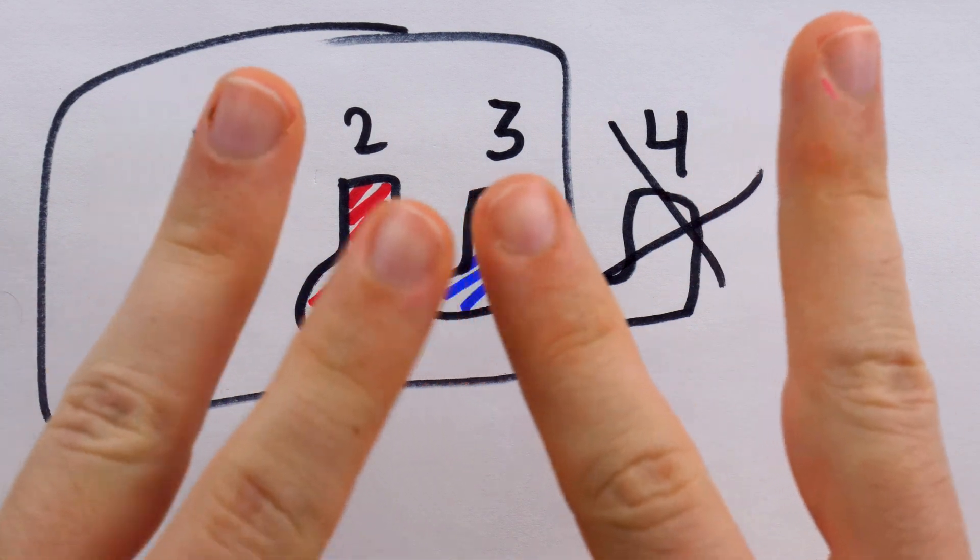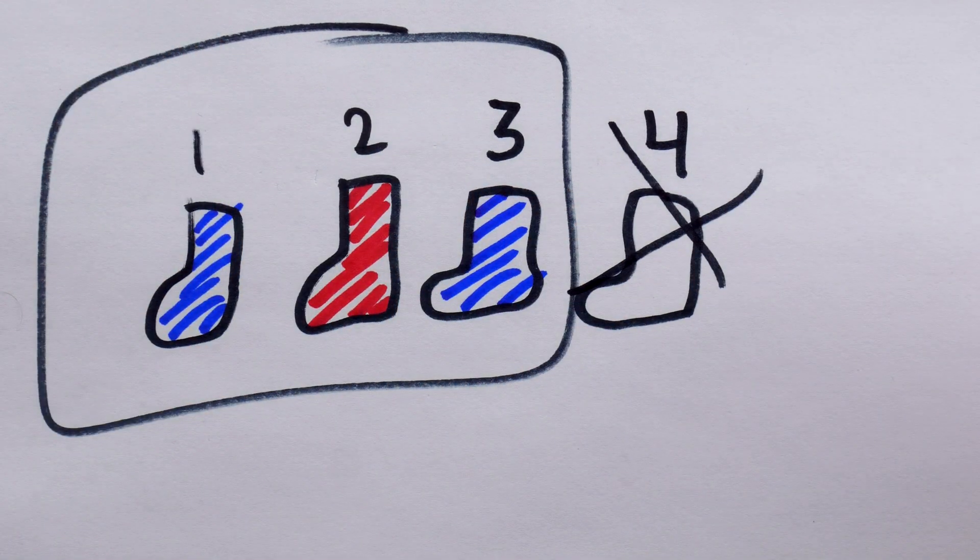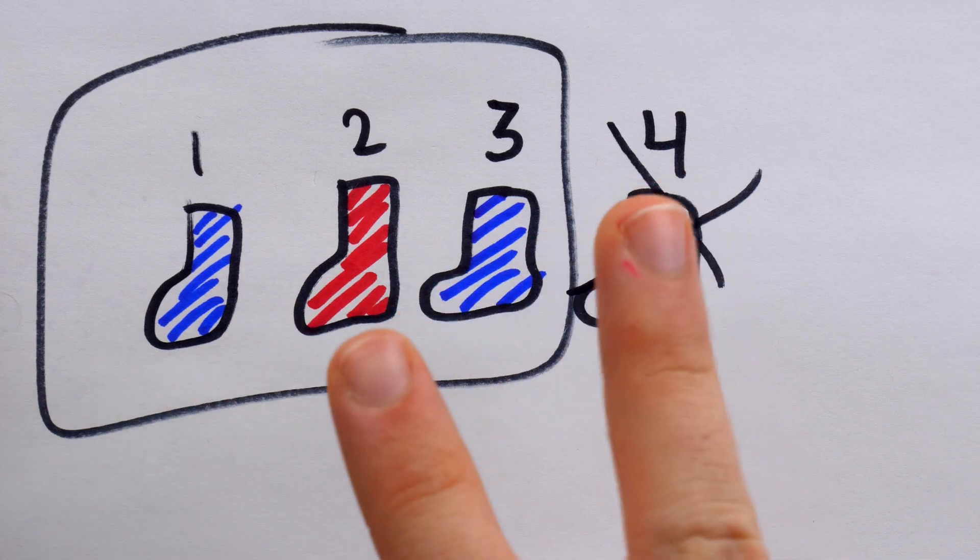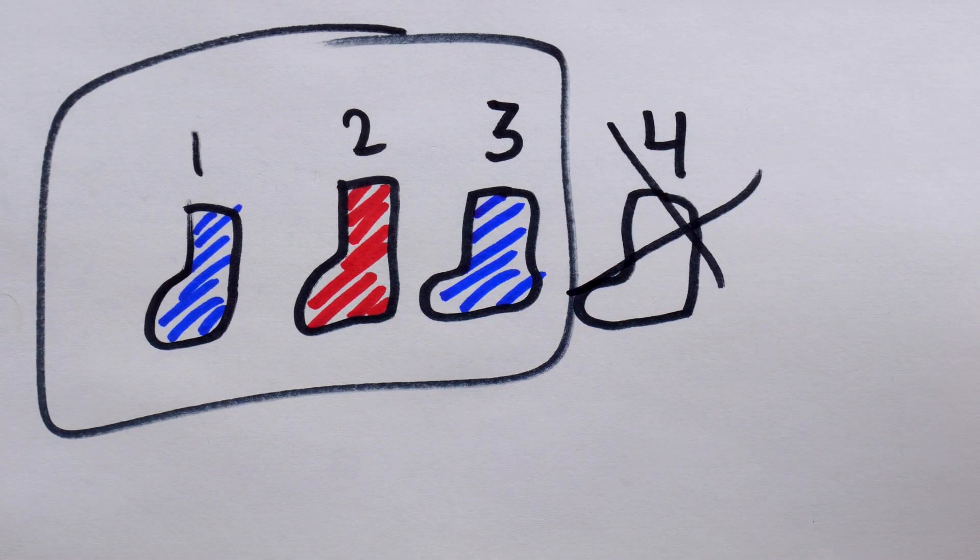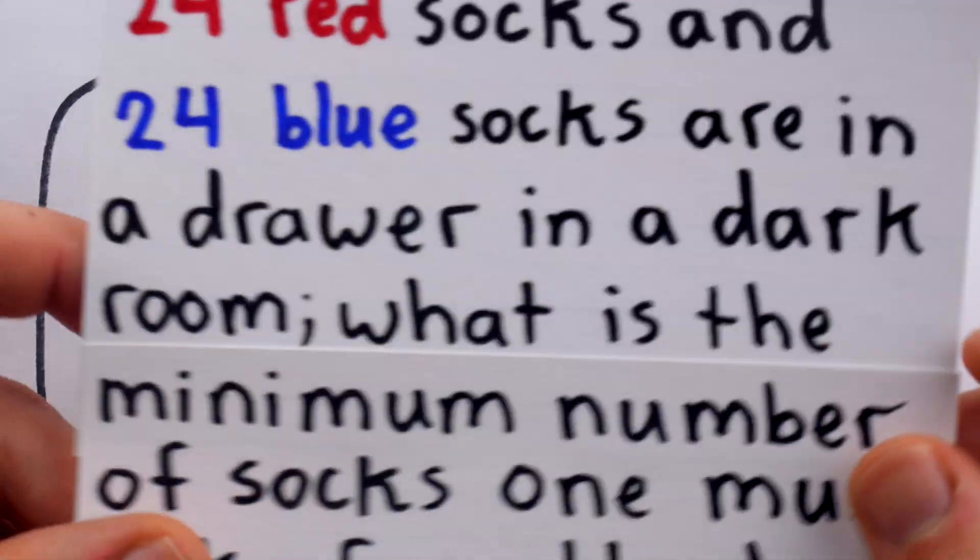This is another example of what's called the pigeonhole principle. If we have three socks and only two colors, then indeed at least two of those socks must share the same color, and thus we get that guaranteed match pair.